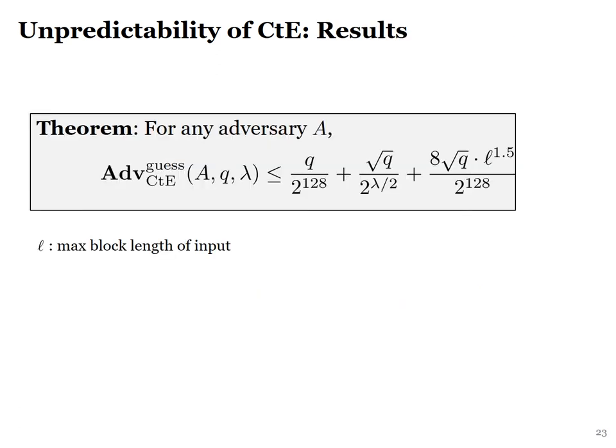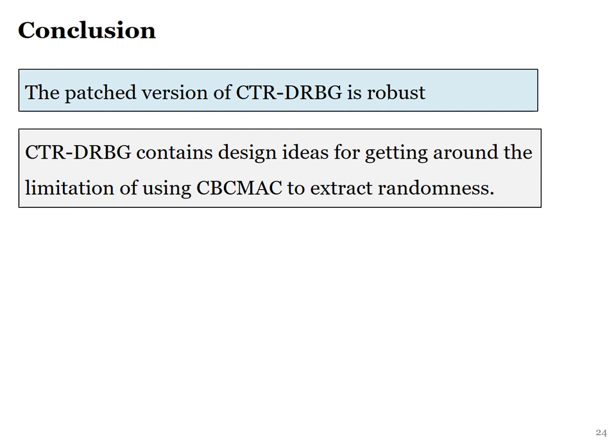In conclusion, our work shows that if you adopt the recommendations from the work of Woodard-Shumel and Carney et al., then Counter-DRBG is robust. Moreover, our work sheds some light on the design of Counter-DRBG. In particular, this construction looks quite cumbersome at first, but underneath it contains very neat design ideas for getting around the limitations of using CBC-MAC to extract randomness.